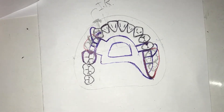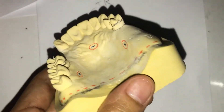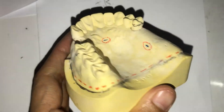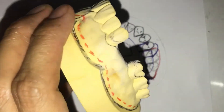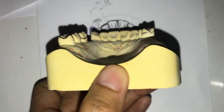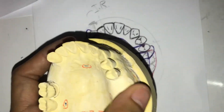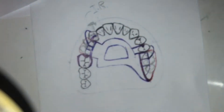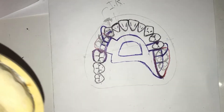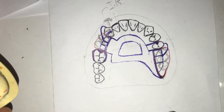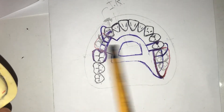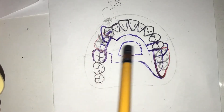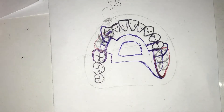This cast has already been surveyed partially with tripoding and everything. Similar to the steps before, we have already determined our primary abutments: teeth 16, 13, and 25.